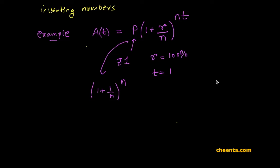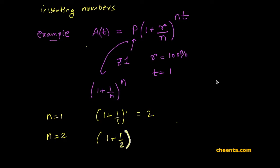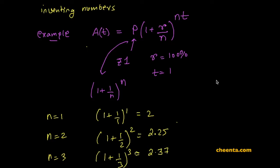For n equals 1, this is (1 + 1/1)^1, which is 2. For n equals 2, it is (1 + 1/2)^2, that's 2.25. For n equals 3, it's (1 + 1/3)^3, that's approximately 2.37, and so on. This is an increasing sequence — the values of the terms increase as you increase n.